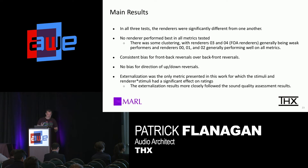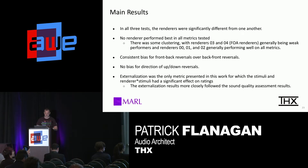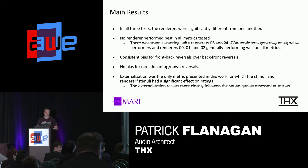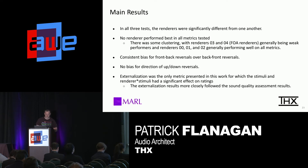The main results from this test: in all three tests, renderers were significantly different from one another — multiple technologies in the industry all perform differently among a group of people. We found that renderers three and four, which are FOA (first-order ambisonics), were generally weak compared to HOA, which is a higher-order representation of audio — that seems to be correct. There was a consistent bias for front-to-back over back-to-front reversals, no bias found for up-down. And externalization was the only metric where both stimuli and renderer-times-stimuli had an effect on the ratings.